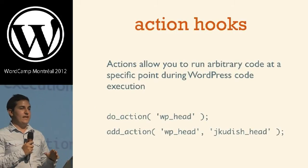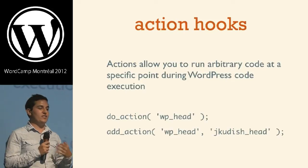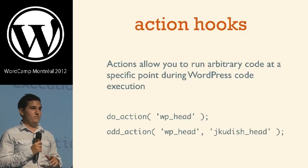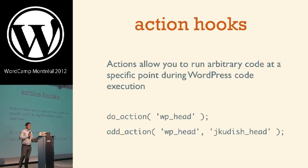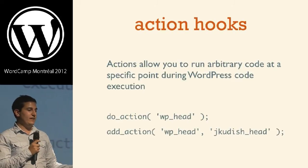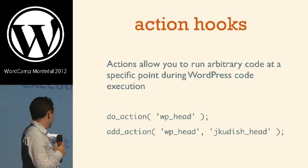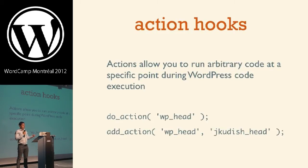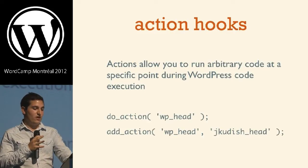Hooks are really the main architecture for developing additional features or modifying existing behavior within WordPress. There are basically two different types of hooks: action hooks and filter hooks. Action hooks allow you to run arbitrary code at a specific point during the WordPress code execution. So somewhere in core there's the line 'do_action("wp_head")' — when that action fires, you can add code that will run at that point. Here I'm adding an action to wp_head called jkiddish_head.